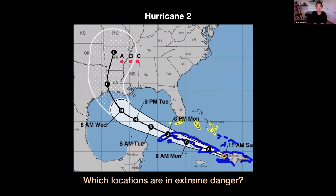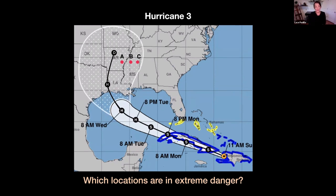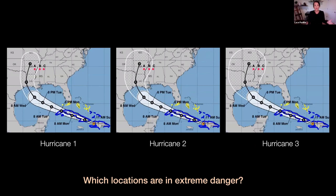I'd like you to make the same judgment for another forecast. Do you think that A, B, and/or C are in extreme danger? How about for this one — is A, B, and/or C in extreme danger? Now if you're like the vast majority of people, you would have seen the first one and thought A is in danger, possibly B. For the middle one you'd say A and B, maybe C. And then for the last one you would think, of course, all three locations are likely in extreme danger.